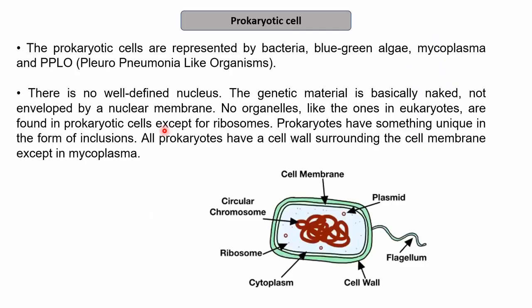Moving forward to prokaryotic cells in detail. Prokaryotic cells are represented by bacteria, blue-green algae (BGA), mycoplasma, and pleuro-pneumonia-like organisms. The most important characteristic of prokaryotic cells is that no well-defined nucleus is present — the genetic material is naked, not enveloped by any nuclear membrane. Since there is no nuclear membrane, the genetic material is freely present in the cytoplasm. No organelles like those present in eukaryotes are found in prokaryotic cells.